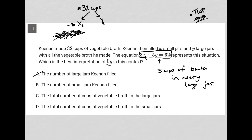The number of small jars has nothing to do with small jars. The total number of cups of vegetable broth in the large jars. Yeah, that makes sense. Like if I multiply five times Y, right, because Y is the number of large jars, then that would be the value of that would give me the total number of cups of vegetable broth in the large jars.